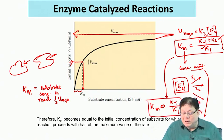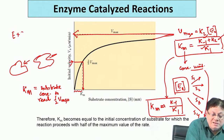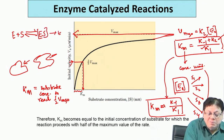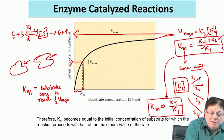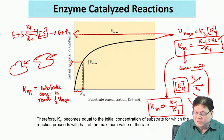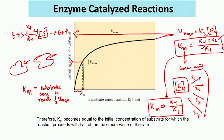Since K2 is much smaller, Km is approximately equal to K-minus-1 divided by K1. In the reaction scheme E + S → ES → E + P, K1 is the forward and K-minus-1 is the reverse rate constant. K1 divided by K-minus-1 is the equilibrium (association) constant, so K-minus-1 divided by K1 is the dissociation constant of the ES complex. Therefore, Km is also roughly equal to the dissociation constant of the ES complex.